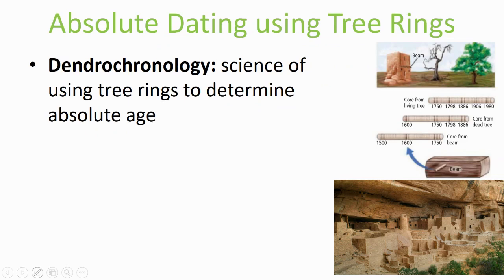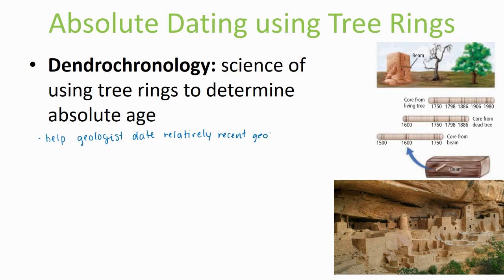We can also use absolute dating using tree rings. Dendrochronology is the science of using tree rings to determine absolute age. Many trees contain a record of time in the rings of their trunks, called annual tree rings. These rings consist of a pair of early season and late season growth rings, and the width of the rings depends on certain conditions in the environment, which can help geologists date relatively recent geologic events.